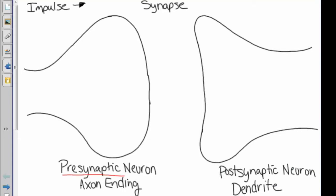The synapse is the space between two neurons. The information travels from the presynaptic neuron or axon ending to the postsynaptic neuron.